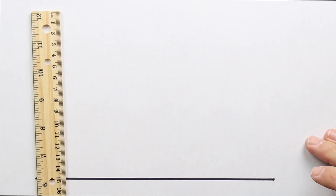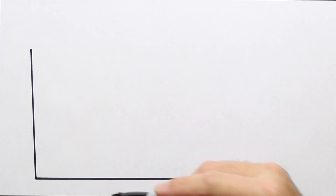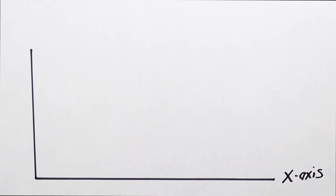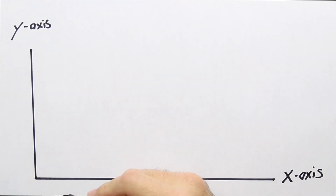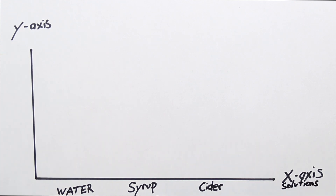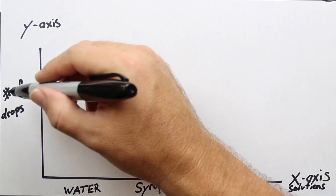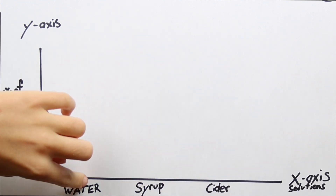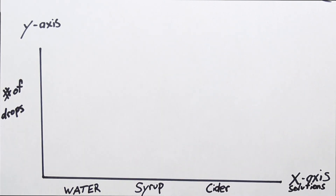This is also an excellent opportunity to introduce the concept of graphing to your older kids. Today, we're going to be making a bar graph, which traditionally has an x-axis and a y-axis. All you have to do is have your kids place the different variables that you used in your experiment down on the x-axis and the number of drops on the y-axis.